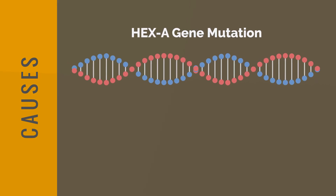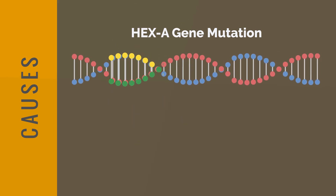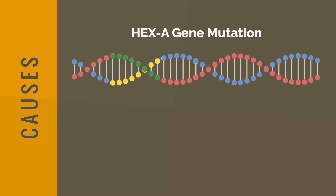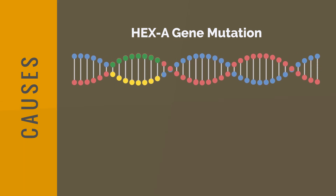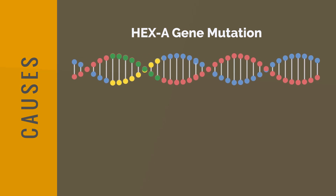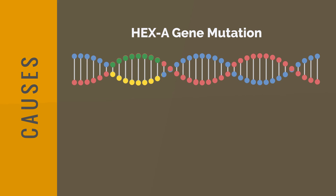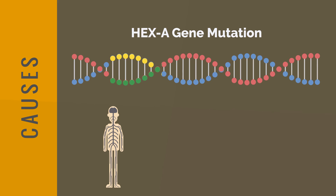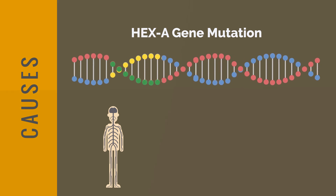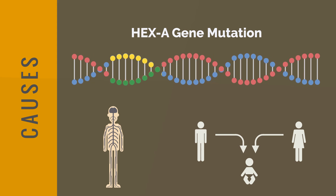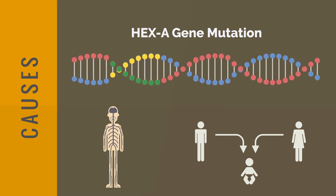Tay-Sachs disease is caused by mutations in the HEX-A gene, responsible for producing an enzyme called hexosaminidase A. Without this enzyme, a fatty substance called ganglioside, or GM2, accumulates in nerve cells, leading to their decay. The disease is inherited in an autosomal recessive manner, meaning both parents must carry a mutated gene to pass it on to their child.